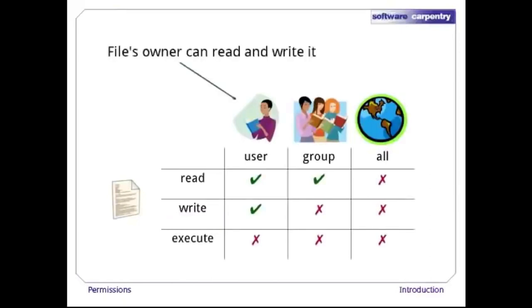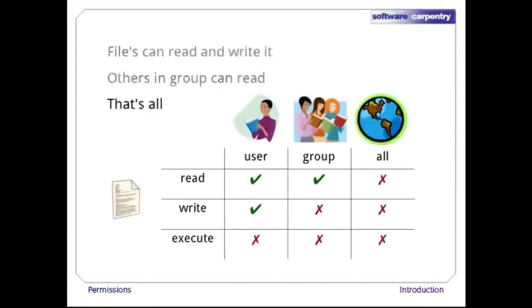Other people in the file's owning group can read it, but not modify it. And nobody else can do anything with it at all. Let's have a look at this model in action. If we cd into the labs directory, ls shows us that it contains three things: safety.txt, setup, and waiver.txt.